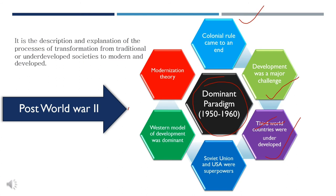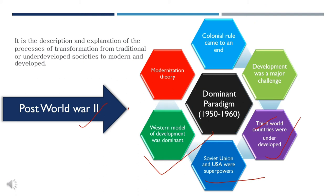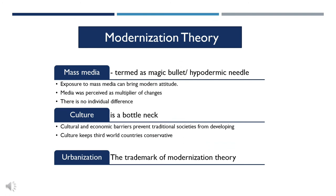After World War II, the Soviet Union and the United States emerged as superpowers and were considered developed countries, so their model of development — the Western model — was dominating. It was believed that for development, developing and underdeveloped countries needed to follow western developed countries. Thus evolved modernization theory, which is the description and explanation of the process of transformation from traditional or underdeveloped societies to modern and developed ones.